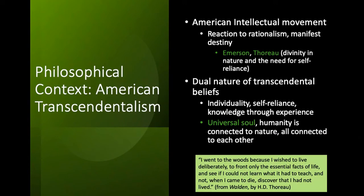Henry David Thoreau was a contemporary of Emerson's. He was educated at Harvard and resigned his job as a school teacher when they insisted that he beat his students. Thoreau's rebellious nature once sent him to prison — he was an abolitionist and was jailed for refusing to pay taxes to a government that supported slavery. He was also a transcendentalist, and like Emerson, he saw nature as a place beyond the mess of laws and so-called rationality. He ended up building a cabin on Emerson's property at Walden Pond, and while there he wrote about his experience of living simply and wisely amid nature.